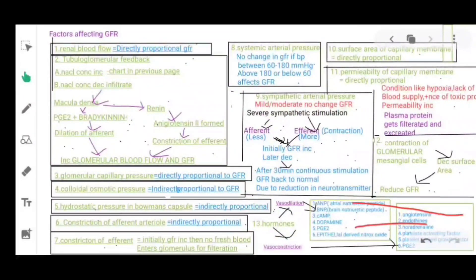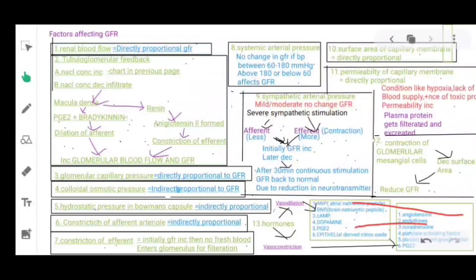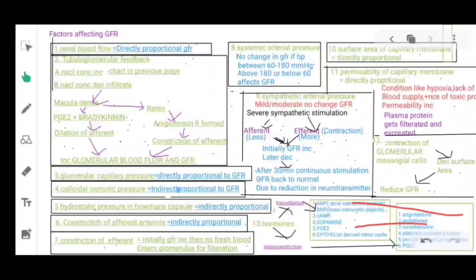Sixth: constriction of the efferent arteriole — it initially favors GFR, so GFR initially increases. However, once there is no fresh blood entering the glomerulus for filtration, GFR subsequently decreases.